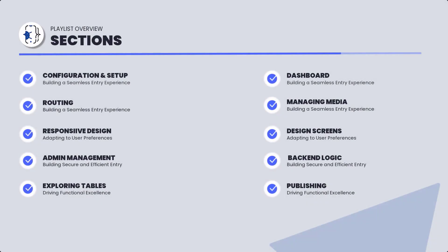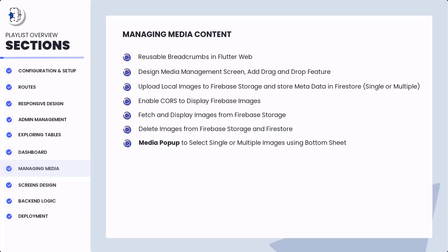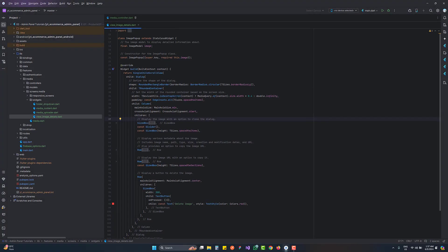We are building the Flutter ecommerce admin panel app. In this course we've already created six sections: configuration, routing and navigation, responsive screens, admin management, tables, dashboard, and now we're completing the media section. In the next tutorial of this media section we'll create a reusable bottom sheet used across all screens wherever an image is required, supporting both single and multiple image selection — so the next tutorial is very important.